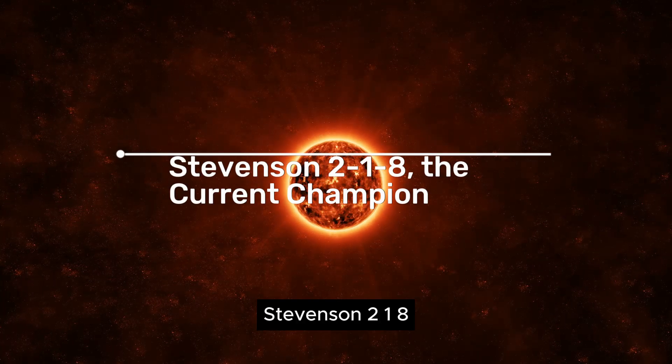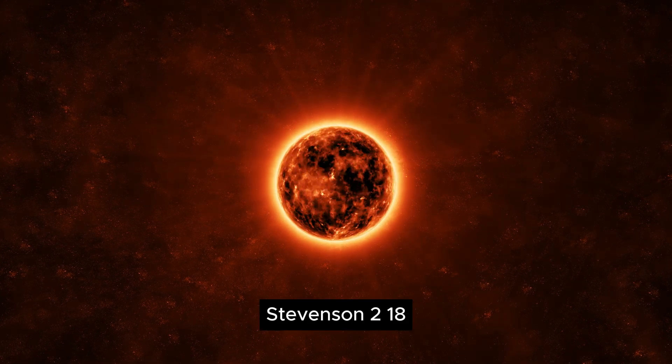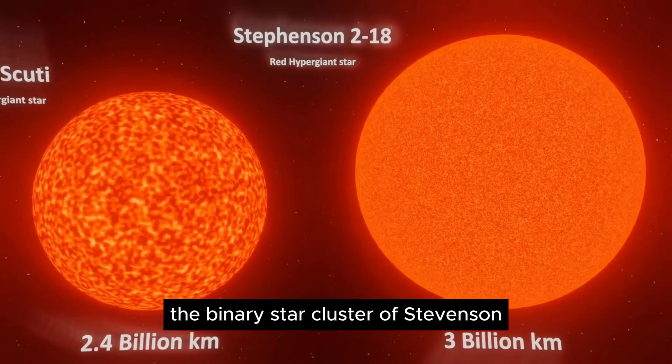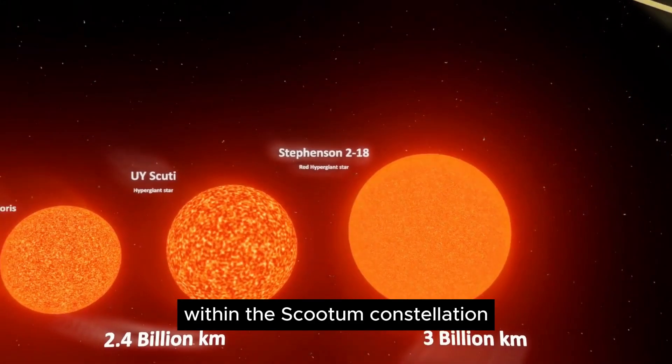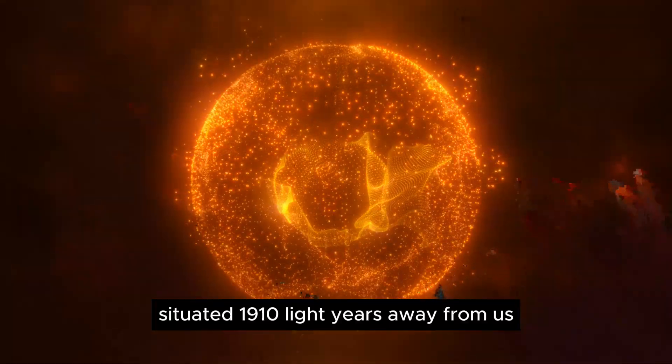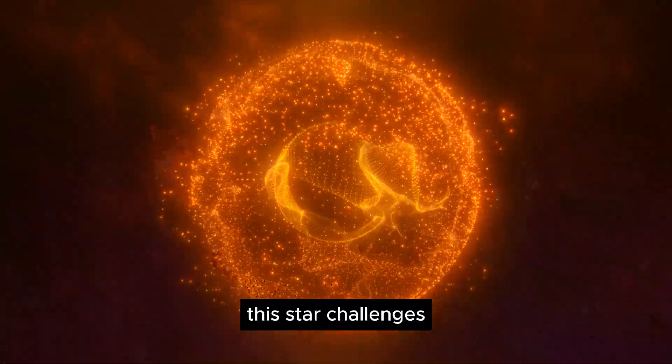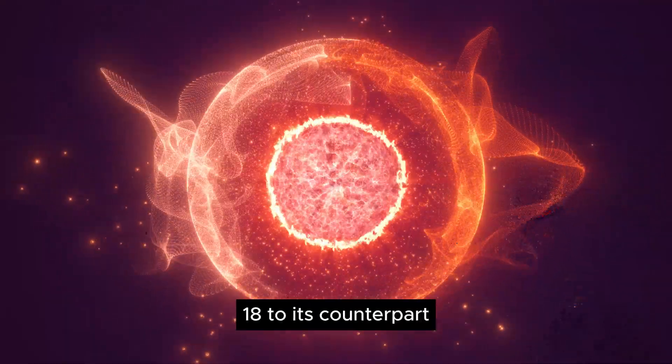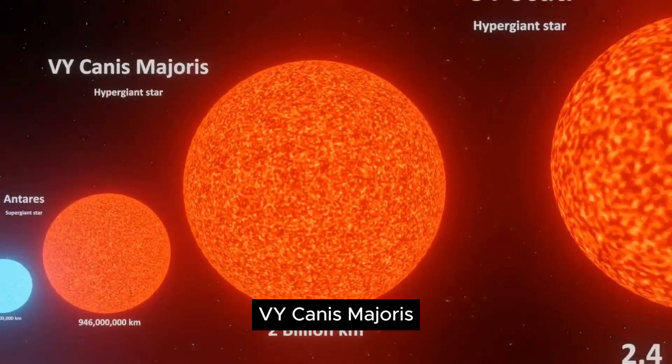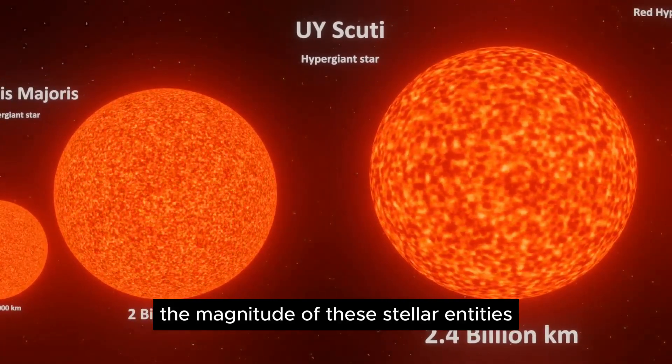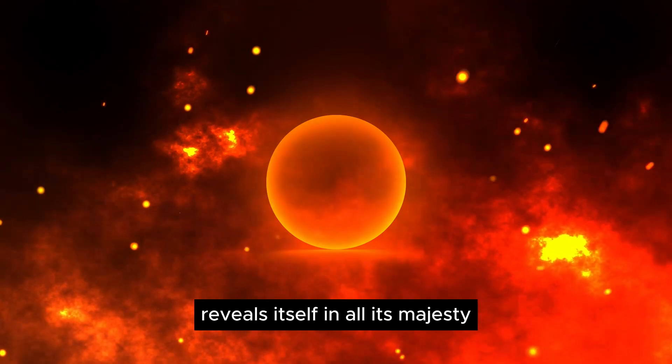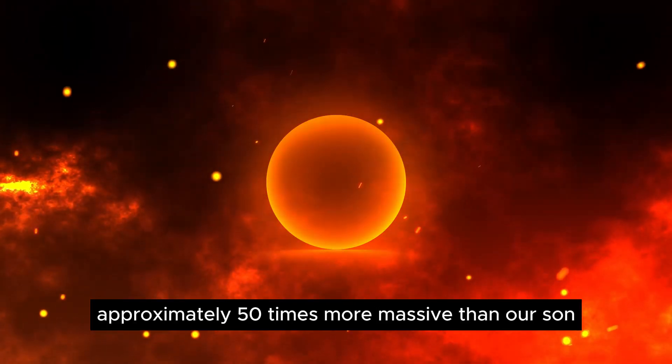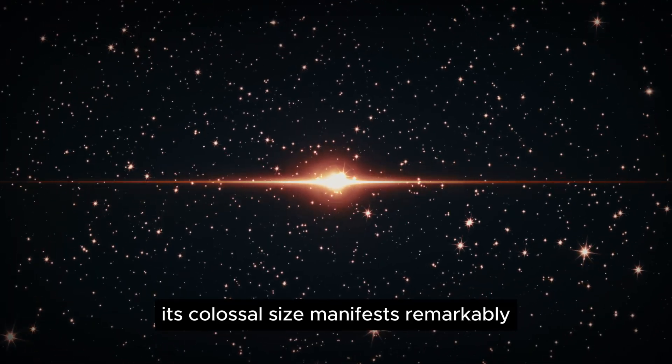Stevenson 2-18, the current champion. Stevenson 2-18, a red hypergiant prominently positioned in the Stephenson 2 star cluster within the Scutum constellation, situated 19,000 light years away from us, challenges our perception of celestial grandeur. Comparing Stevenson 2-18 to its counterpart VY Canis Majoris, the magnitude of these stellar entities reveals itself in all its majesty. Although Stevenson 2-18 is only approximately 50 times more massive than our sun, its colossal size manifests remarkably.